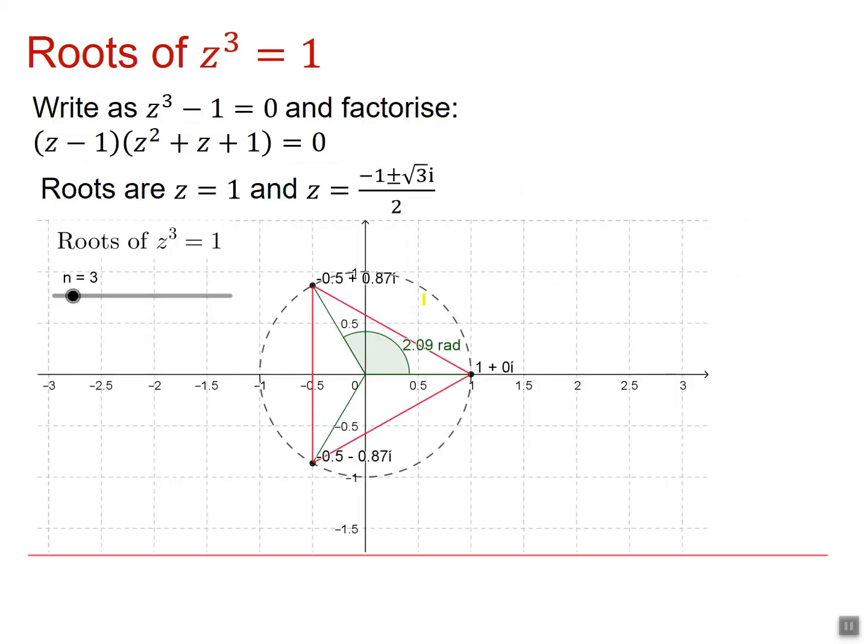For Z cubed, again showing them on an Argand diagram, I get them here, here and here. And their values are 1 and minus 1 plus or minus root 3I all over 2.